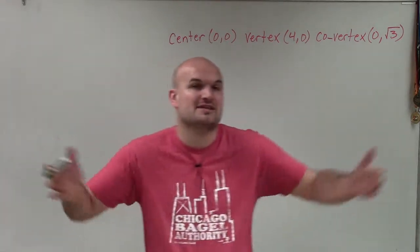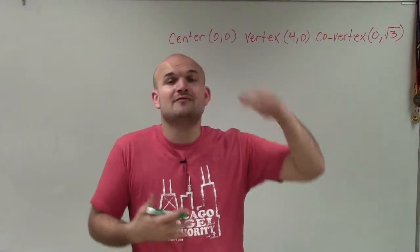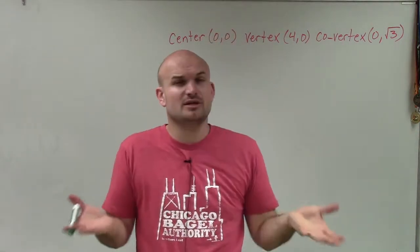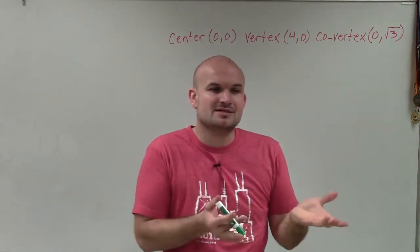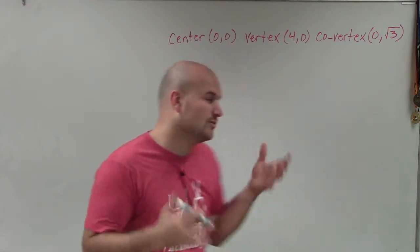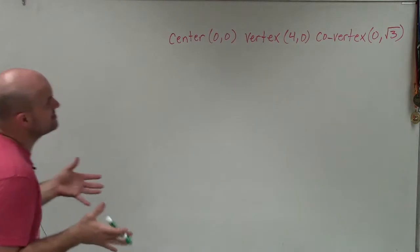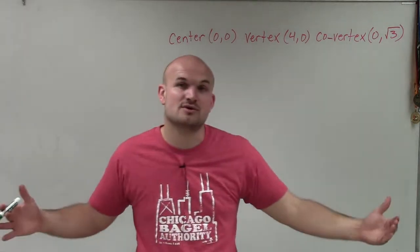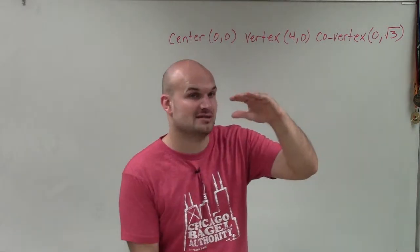We have one where the major axis is horizontal, and one where the major axis is vertical. The difference is whether the larger a² is under the x or under the y. We need to determine: is this an ellipse with a horizontal or vertical major axis?